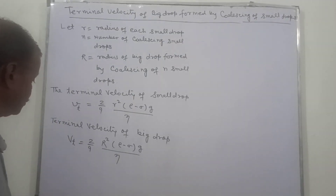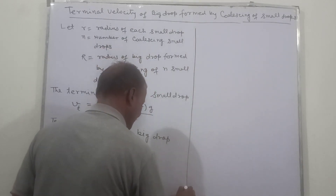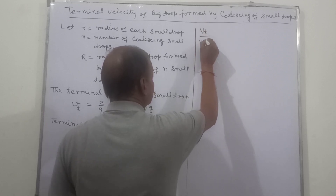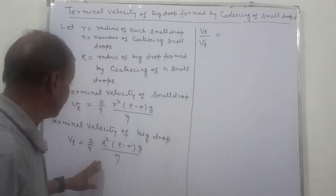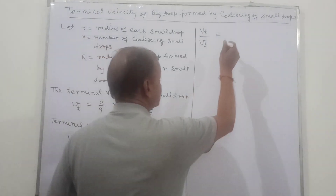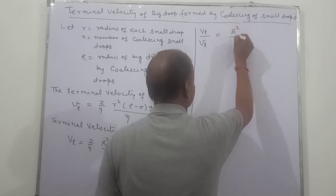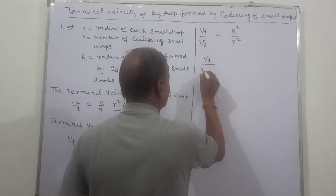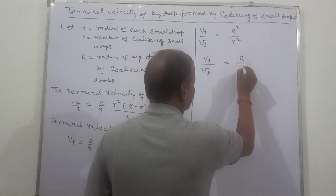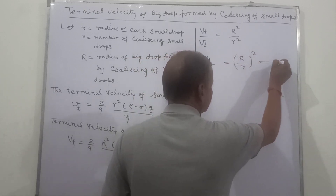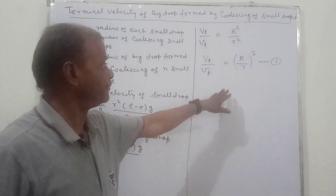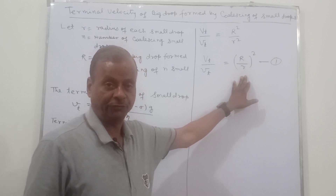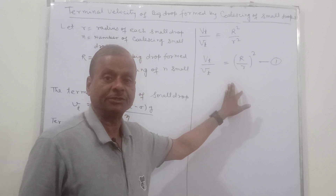Now we find the ratio of these two. VT / Vt equals R² / r², or we can say VT / Vt is equal to (R/r)². So if we find the ratio of the radius of the big drop to the radius of the small drop, we can find the terminal velocity of the big drop.